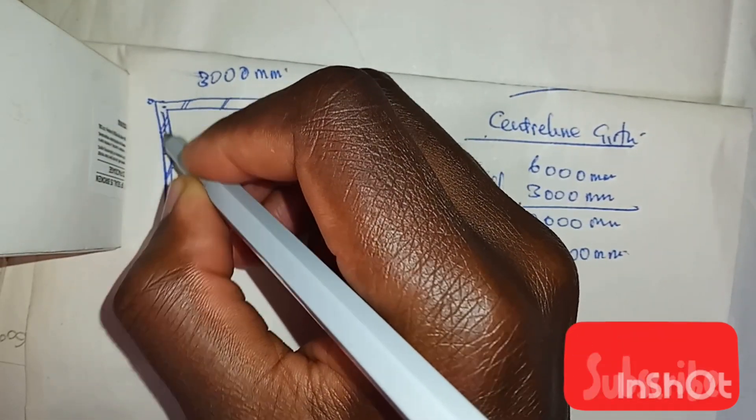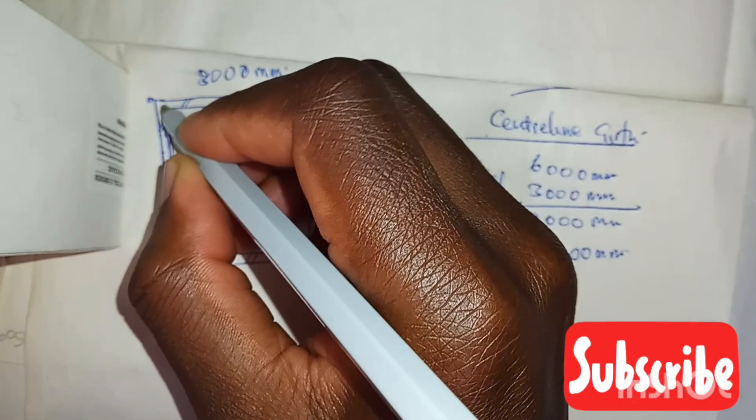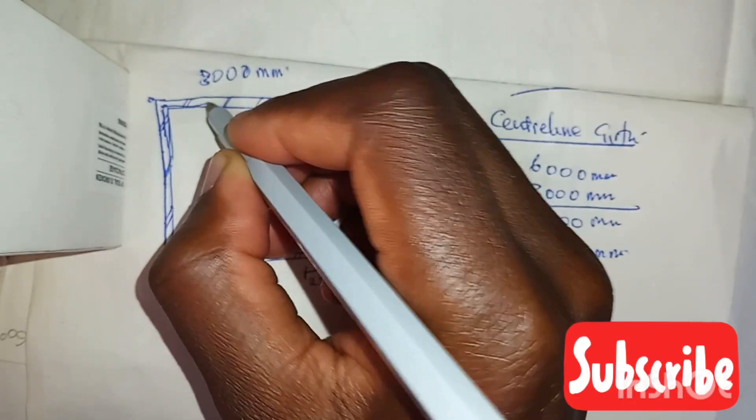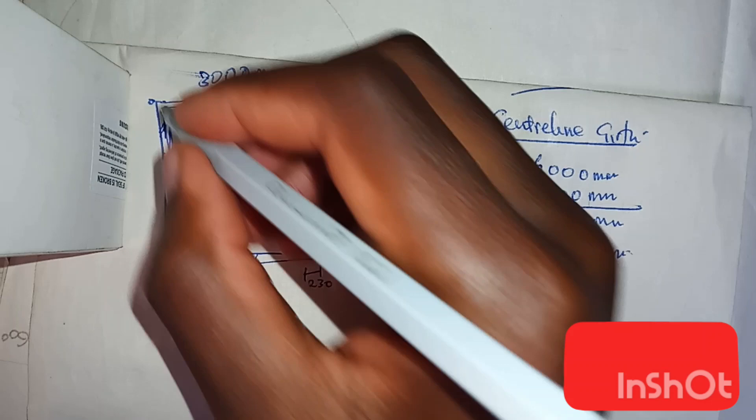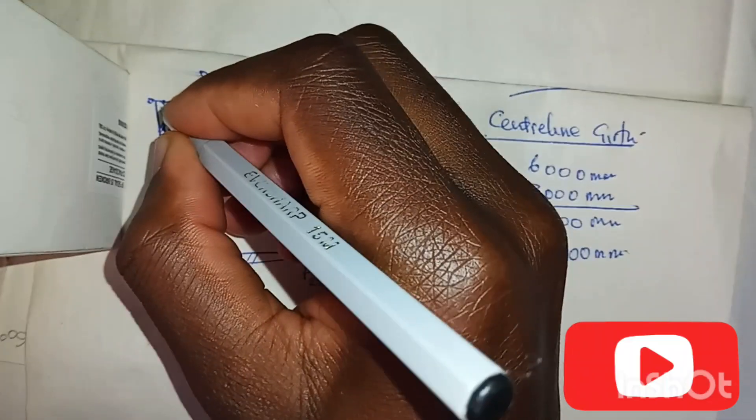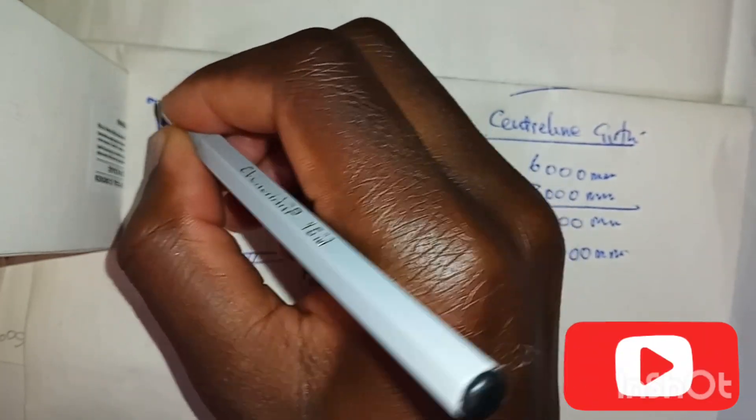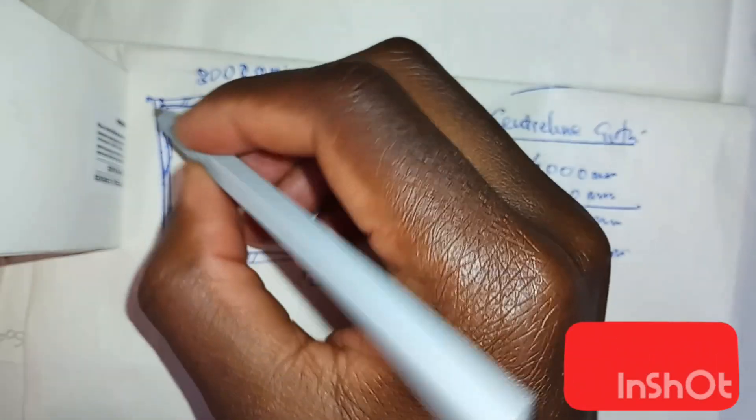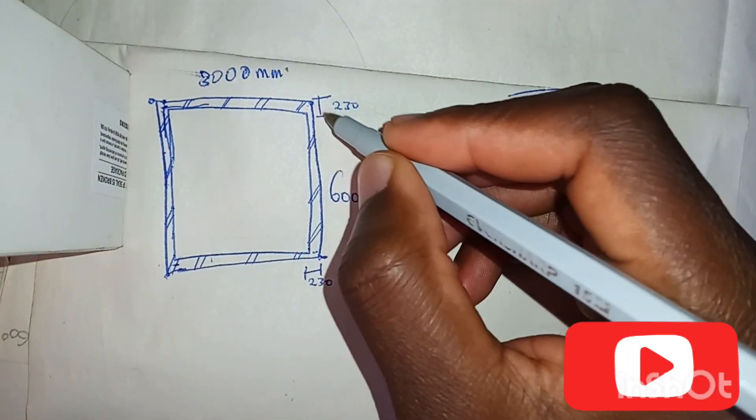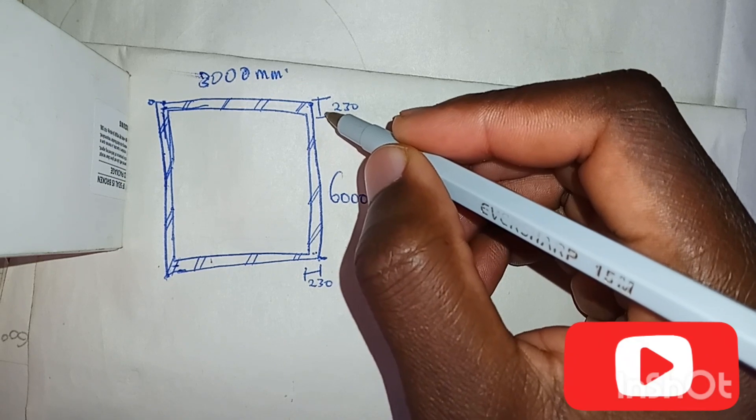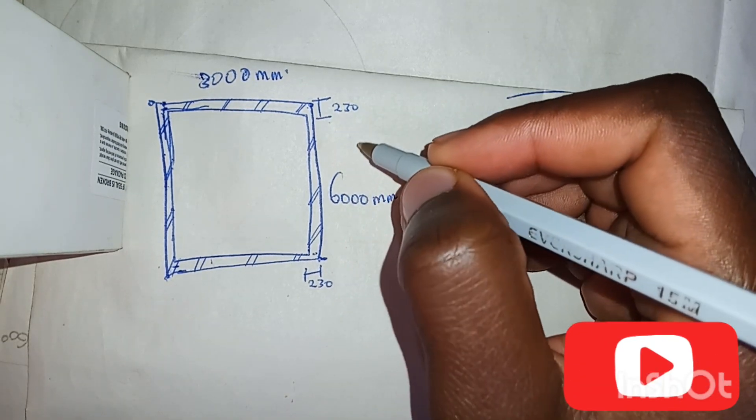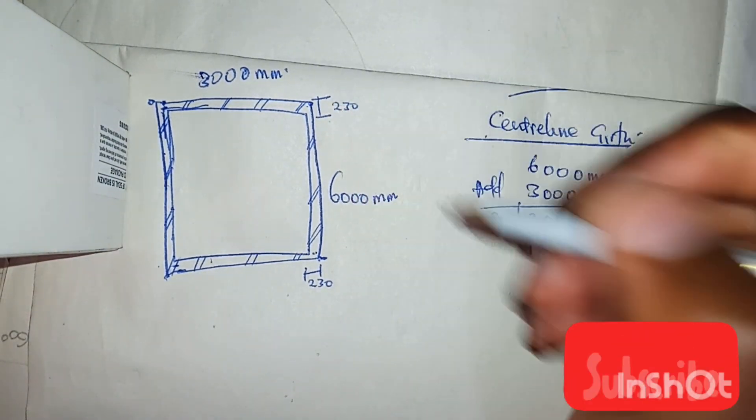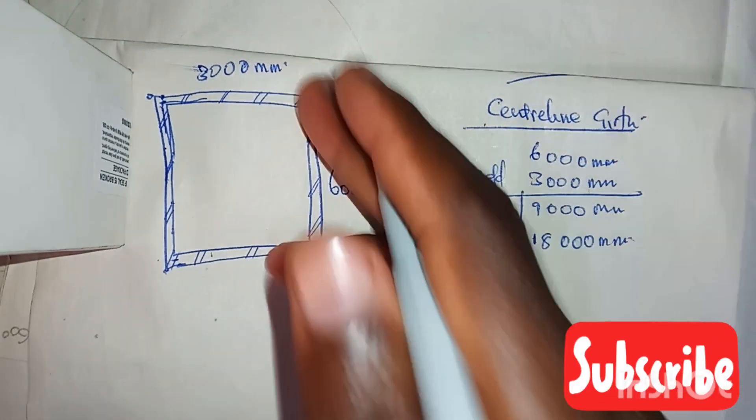Right up to here and from here up to here. So we have to deduct this part, the external part of the wall. This wall is 230 millimeters thick, so we have to deduct half of 230 millimeters thick, which is 115 millimeters thick.